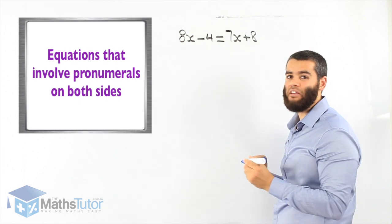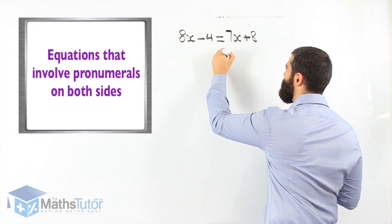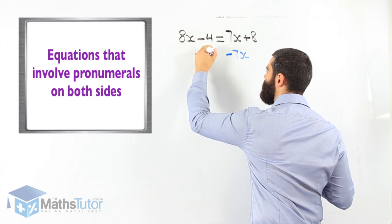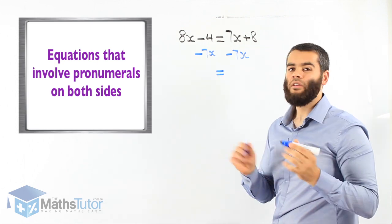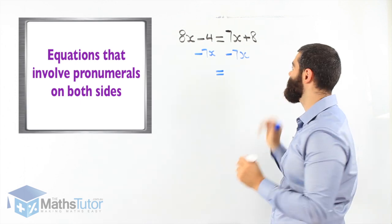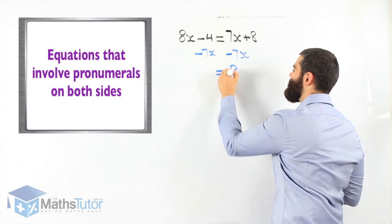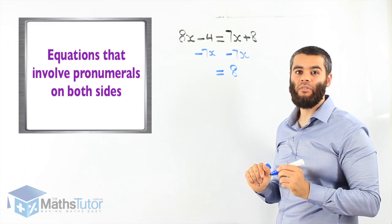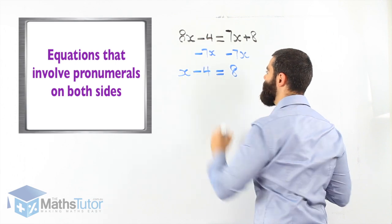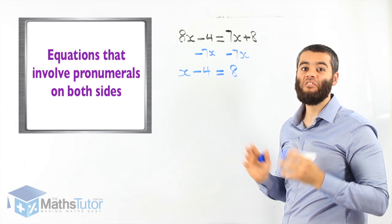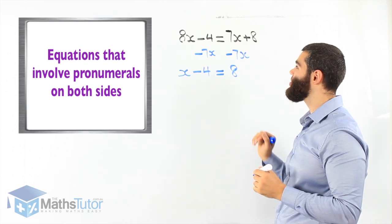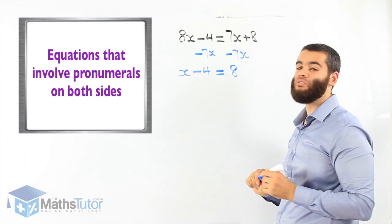7x is a positive 7x, so we want to move it to the other side — we're basically taking away 7x from both sides. 7x take away 7x is gone, we're left with 8. 8x take away 7x, we're left with 1x minus 4. Now we have a 1-step equation: x minus 4 equals 8.